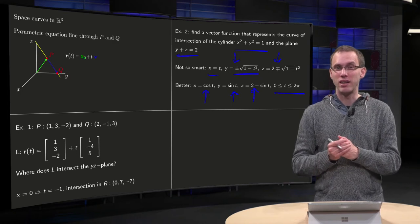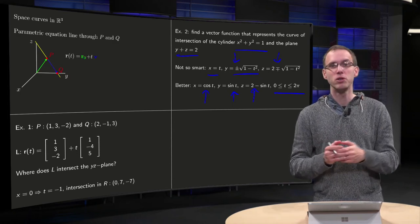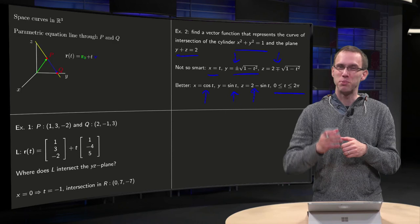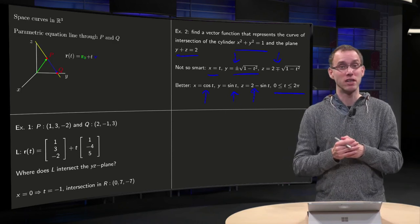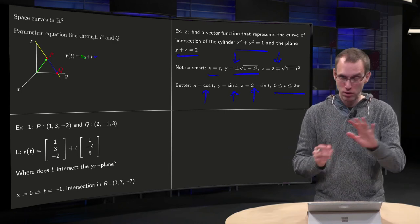And this parametric equation is a lot nicer, the first one is also correct of course, but this one is a lot nicer, especially because later on we may need to start integrating, and then we don't want square roots.